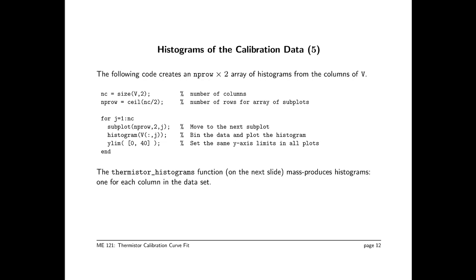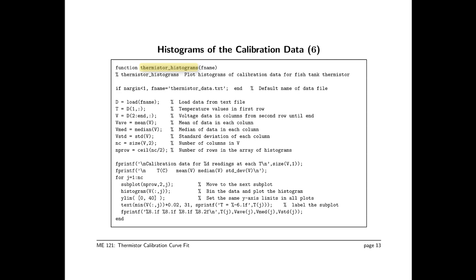The next slide shows a complete MATLAB program that mass produces these histograms. The function name is thermistor_histograms. It has one input argument, fname, which is the name of a file. And the first executable line here says, if nargin is less than one, fname is thermistor-data.txt. This is a nice feature of MATLAB. Say we're developing our code and we have a sample data set, that would be thermistor-data.txt. And we can simply assume that that's the text file. We don't have to type the long text file name when we run the program. On the other hand, after the code is working, we can supply other text files.